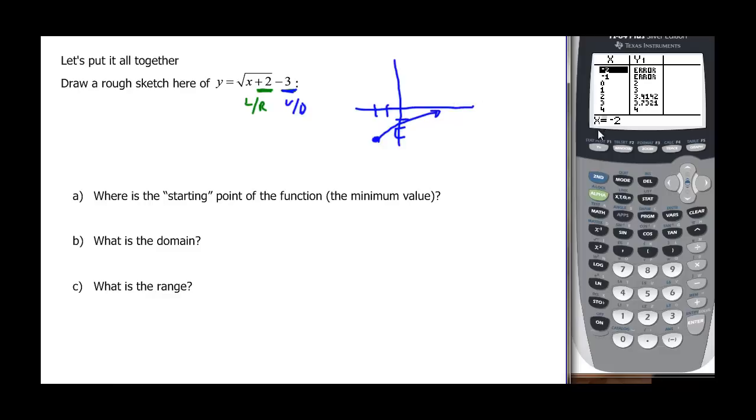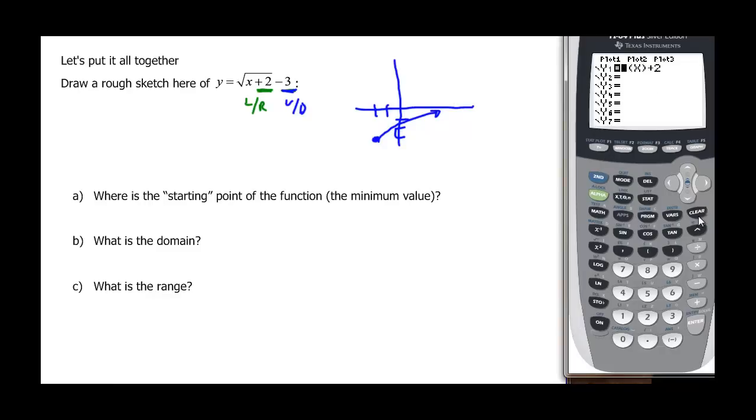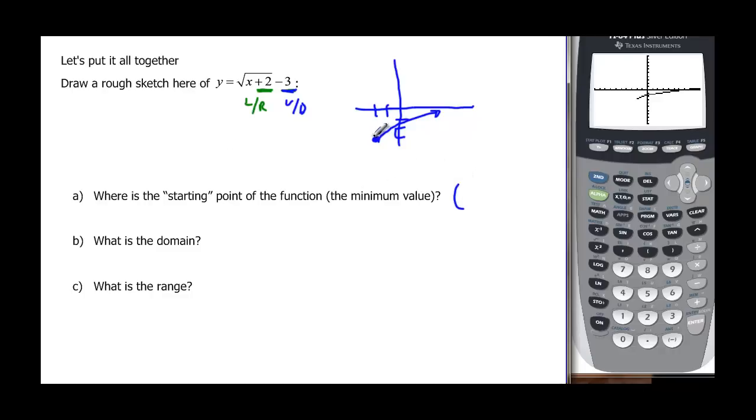Let's verify that with our graph. The square root of x plus 2 under the radical, close the parenthesis, then minus 3. Let's look at our graph. Our graph looks very good, so we did it right. What's our starting point? That point is (-2, -3).